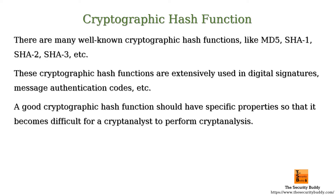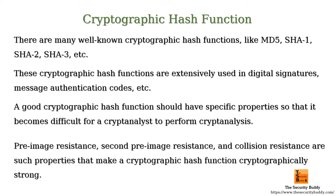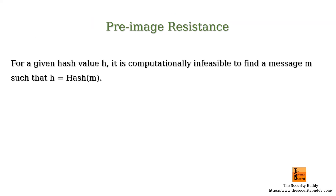Preimage resistance, second preimage resistance, and collision resistance are such properties that make a cryptographic hash function cryptographically strong. As per the preimage resistance property, for a given hash value H, it is computationally infeasible to find a different message M2 such that hash of M1 is equal to hash of M2.